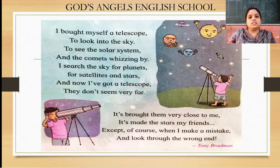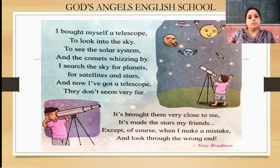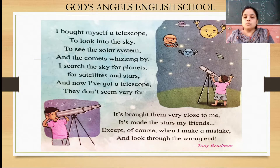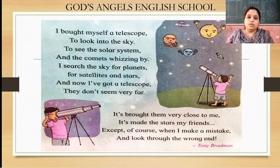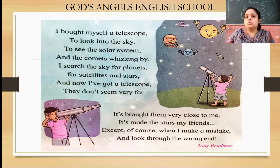Jis se hum sky mein agar dekhenge — sky ki taraf usko dekhenge — to go solar system, planets hum dekh sakte hain. Telescope ke bina sky mein dekhte to humko kuch nahi dekhta, sirf sky dekhta hai. But with the help of the telescope